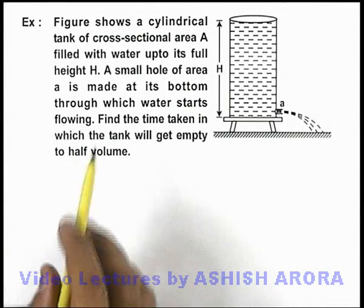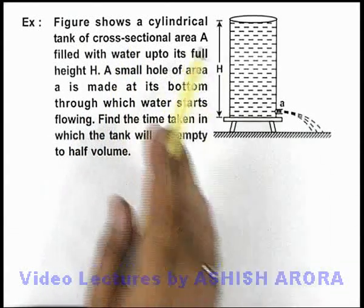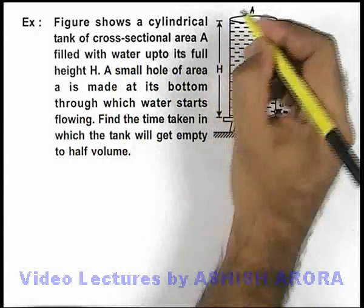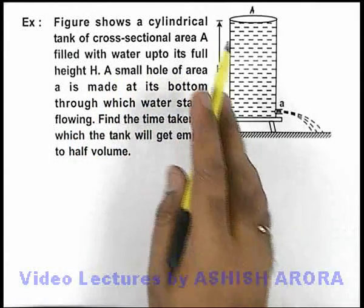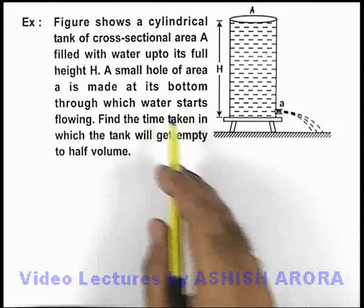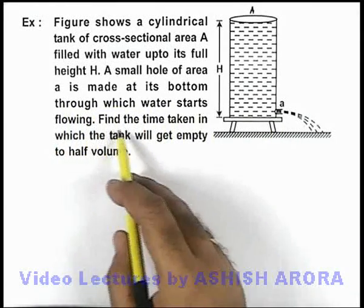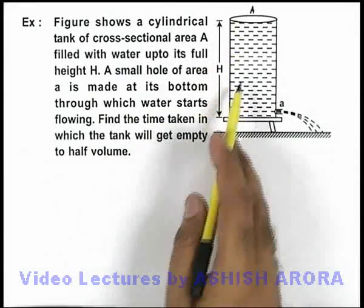In this example, we are given a cylindrical tank of cross-sectional area A, filled with water up to its full height H. A small hole of area a is made at the bottom, through which water starts flowing. We need to find the time taken in which the tank will get empty to half of its volume.